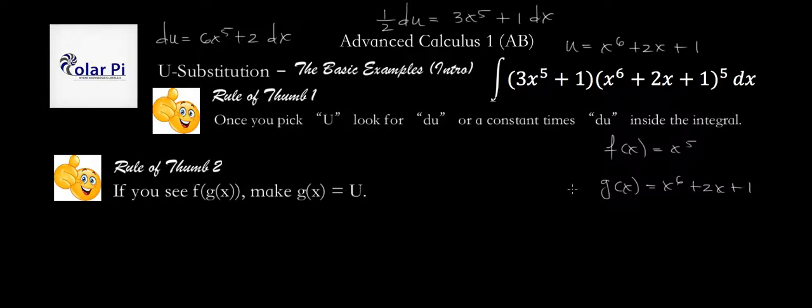And what does this rule of thumb say? It says to make g of x equal to u. Well that's in agreement with rule of thumb number 1 so we don't even need to do any more explanation. Well done rule of thumb number 2.